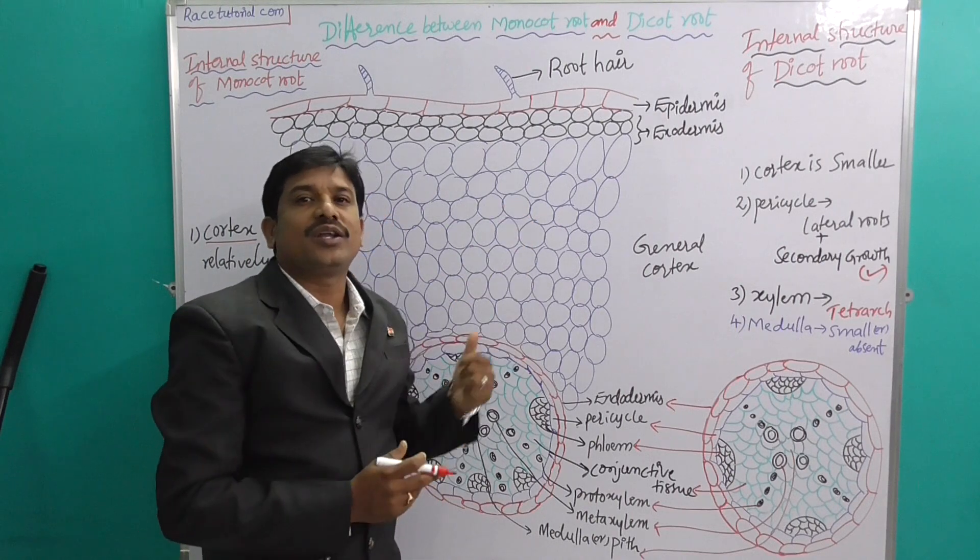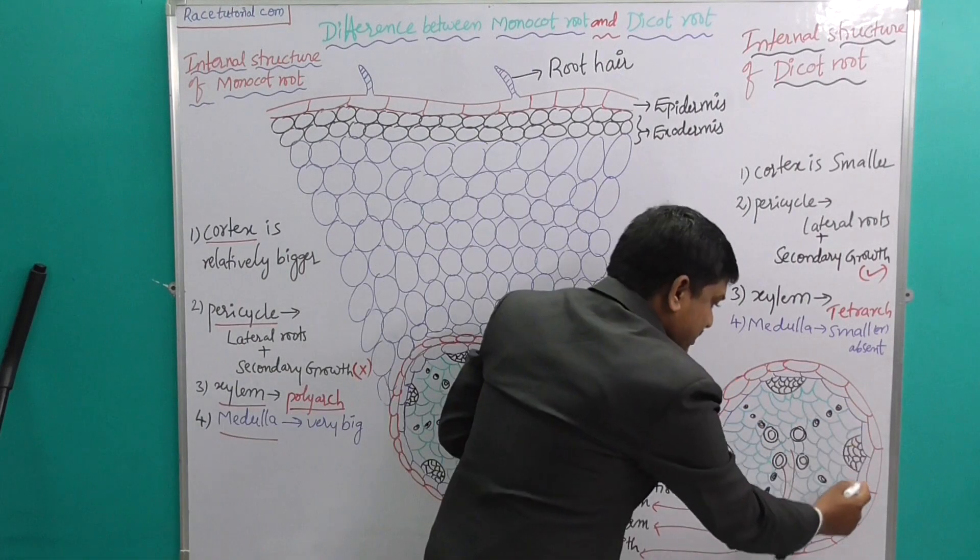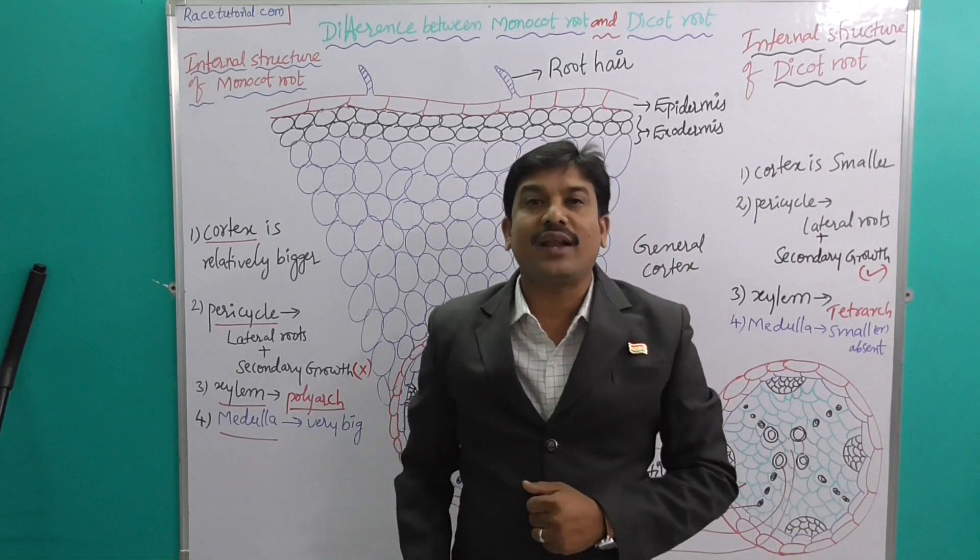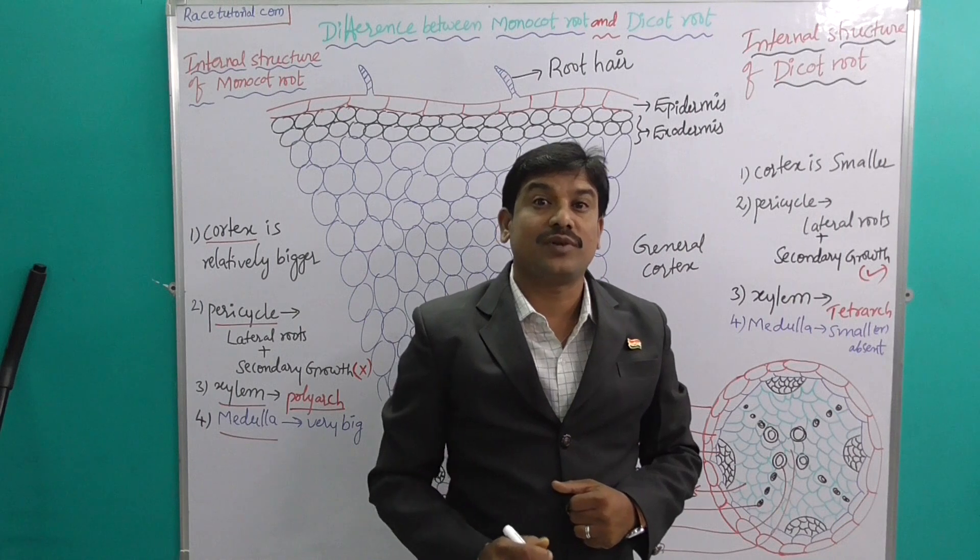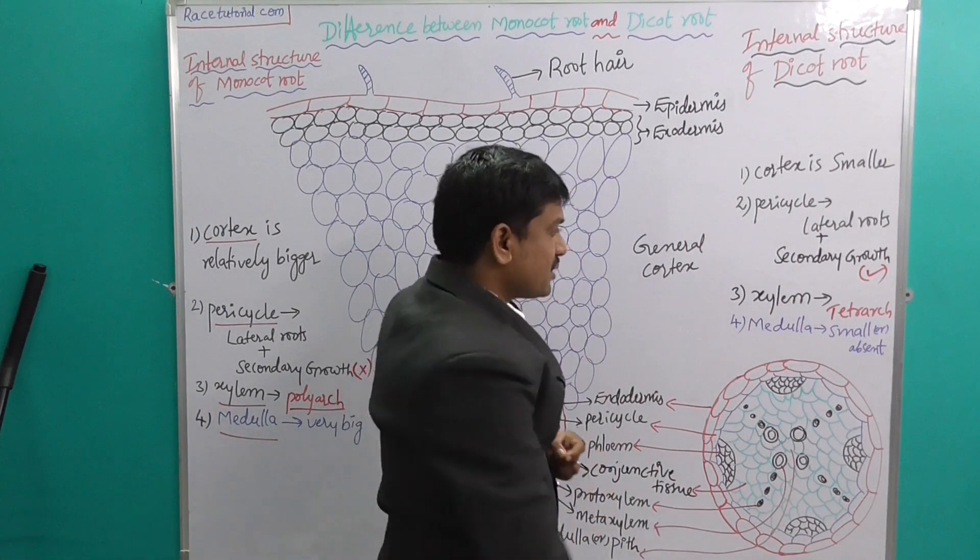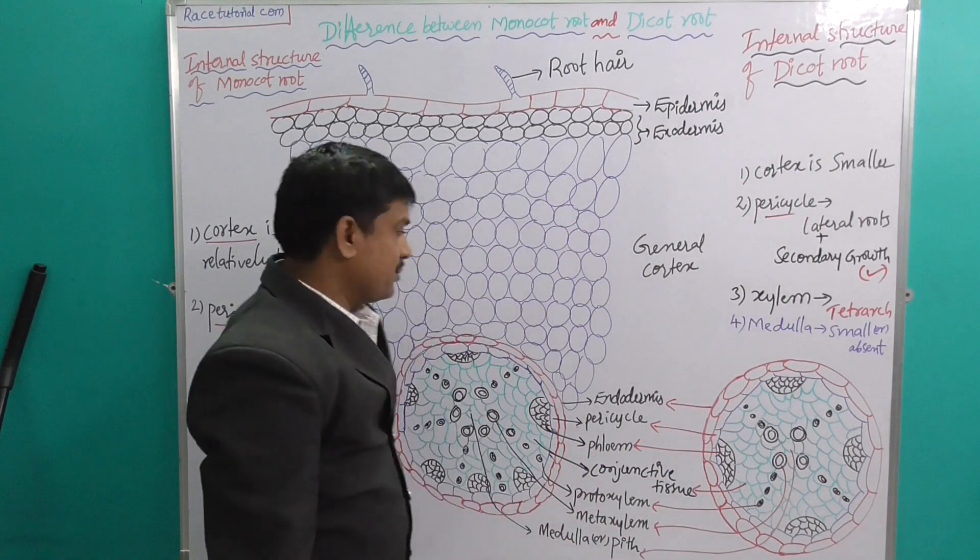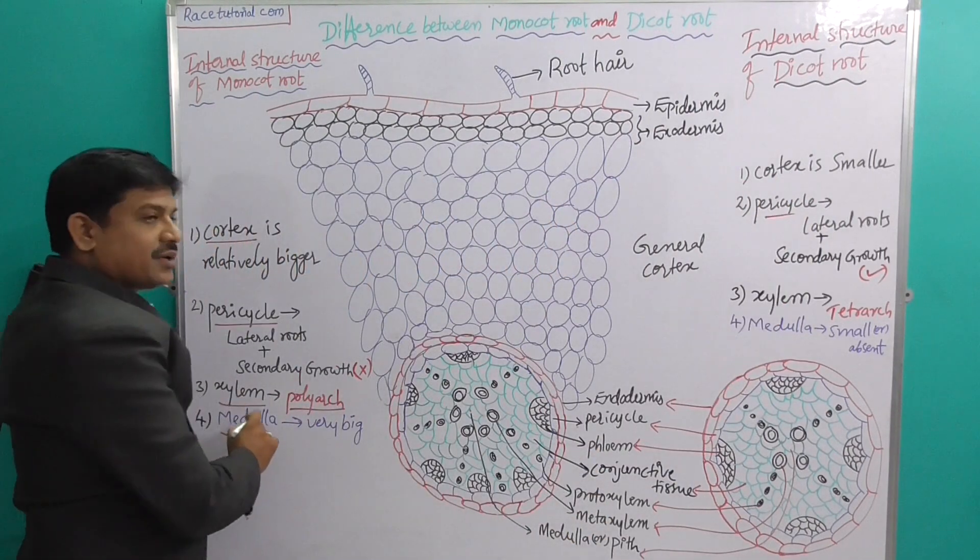In dicot, the pericycle is helpful for lateral root formation and also for secondary growth. This is a very important part. Next is the xylem.